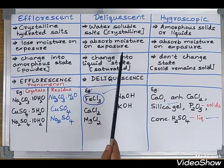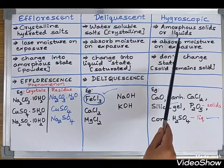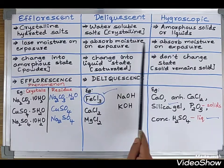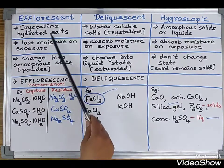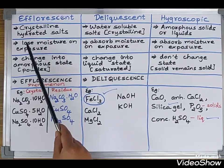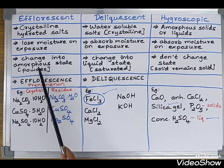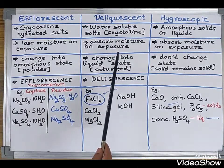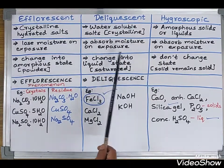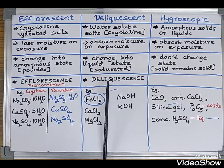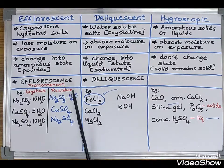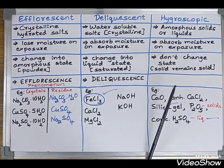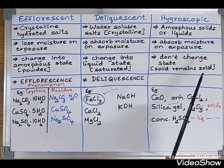Efflorescent substances lose moisture when exposed to the atmosphere, whereas deliquescent and hygroscopic substances both absorb moisture on exposure. However, they differ in what happens next: efflorescent substances, being crystalline, change into an amorphous (fine powder) state when they lose moisture. Deliquescent substances, being water-soluble salts, absorb moisture and change into a liquid state or a saturated solution. Hygroscopic substances absorb moisture but do not change their state — solid remains solid, liquid remains liquid.